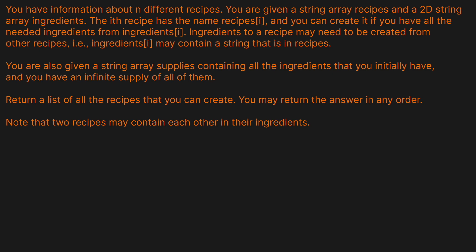You have information about N different recipes. You are given a string array 'recipes' and a 2D string array 'ingredients'. The i-th recipe has the name recipes[i] and you can create it if you have all the needed ingredients from ingredients[i]. Ingredients to a recipe may need to be created from other recipes — i.e., ingredients[i] may contain a string that is in recipes. You are also given a string array 'supplies' containing all the ingredients that you initially have, with an infinite supply of all of them. Return a list of all the recipes that you can create, and you may return the answer in any order.